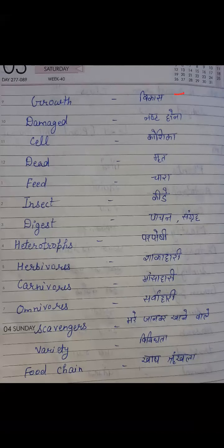Damaged, D-A-M-A-G-E-D. Damaged means nasht hona. Cell, C-E-L-L. Cell means koshika. Dead, D-E-A-D. Dead means mrit. Feed, F-E-E-D. Feed means chaara.